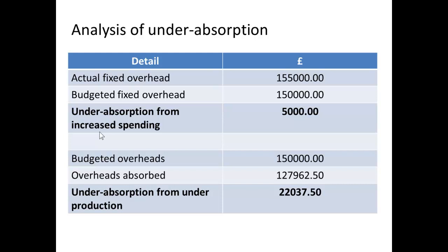I can also analyse my under-absorption by noting that if the budgeted fixed overhead was £150,000 but the actual was £155,000, then the increased spending was £5,000. Looking at the budgeted overheads at £150,000 and calculating the overheads that I absorbed, I find that I've under-absorbed from under-production by £22,037.50. Adding those up comes to £27,037.50, which is, of course, our total under-absorption figure.